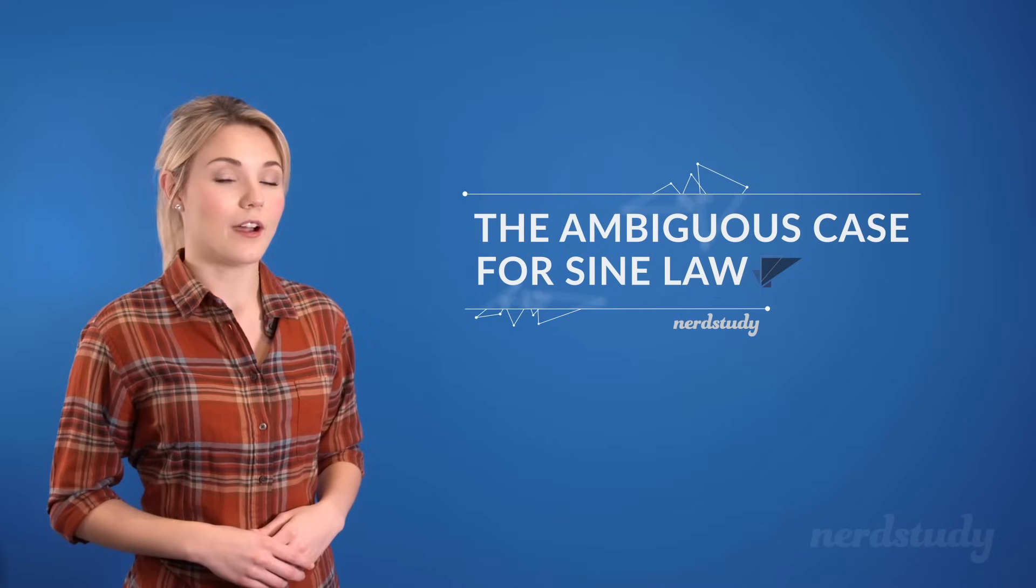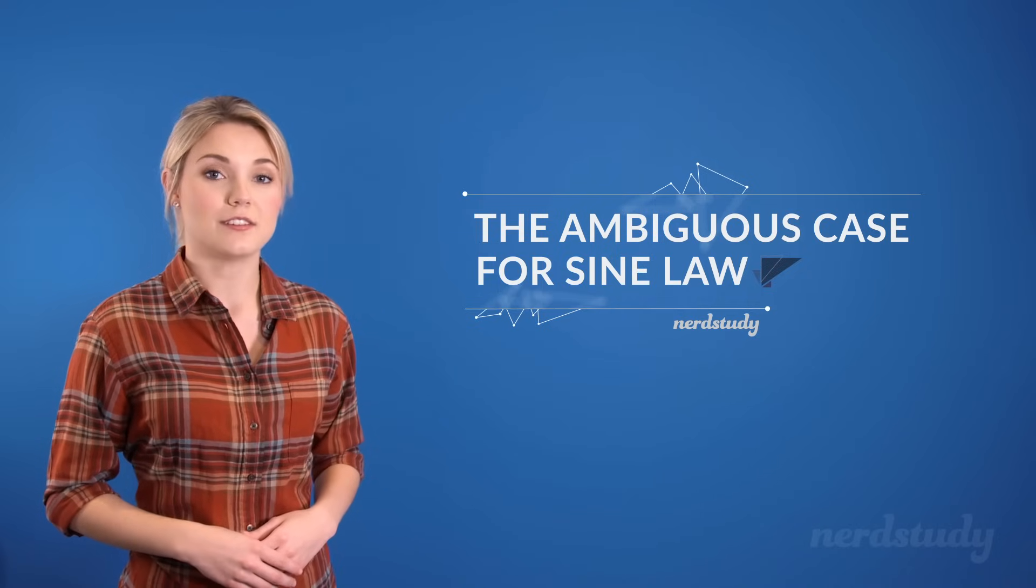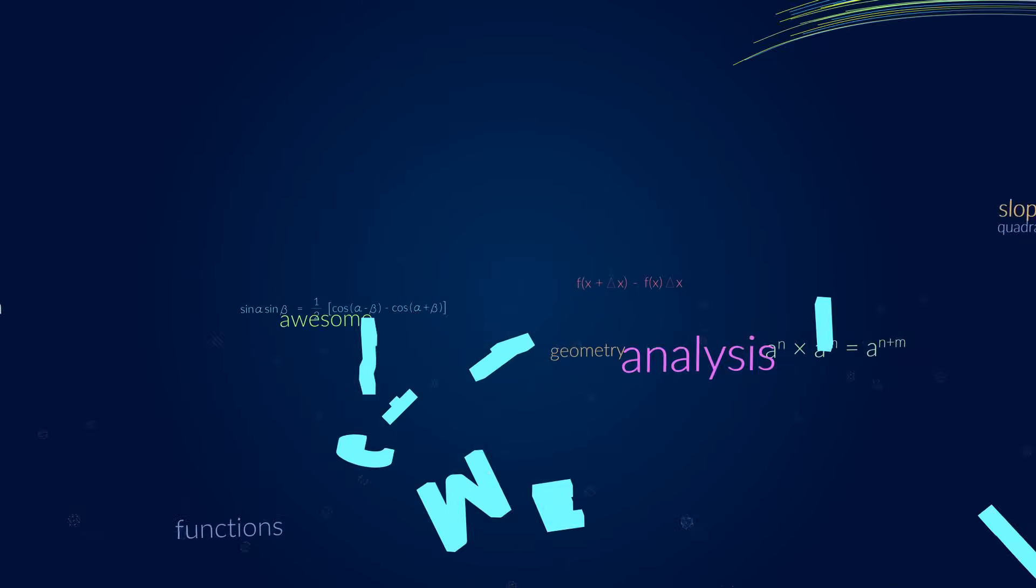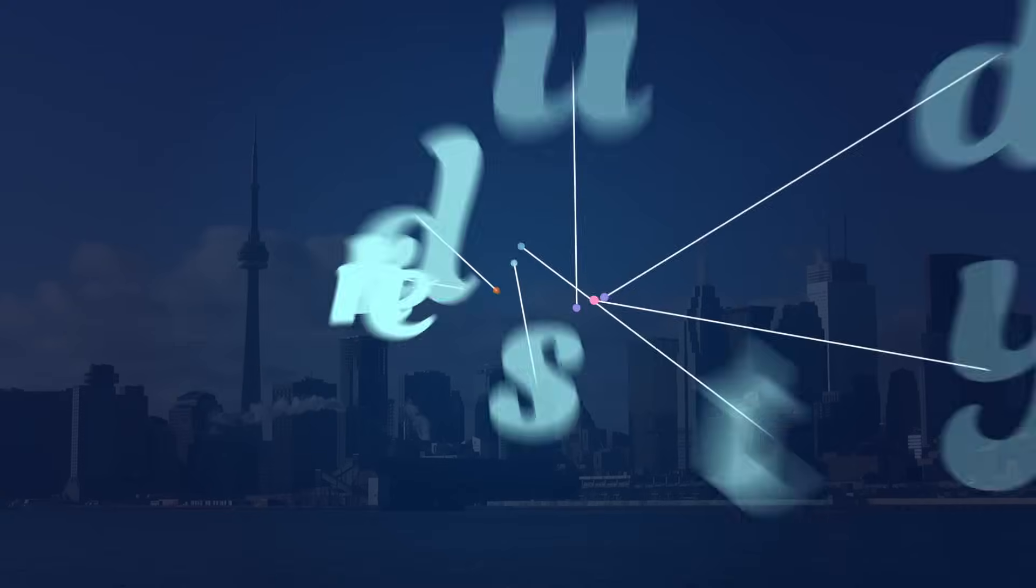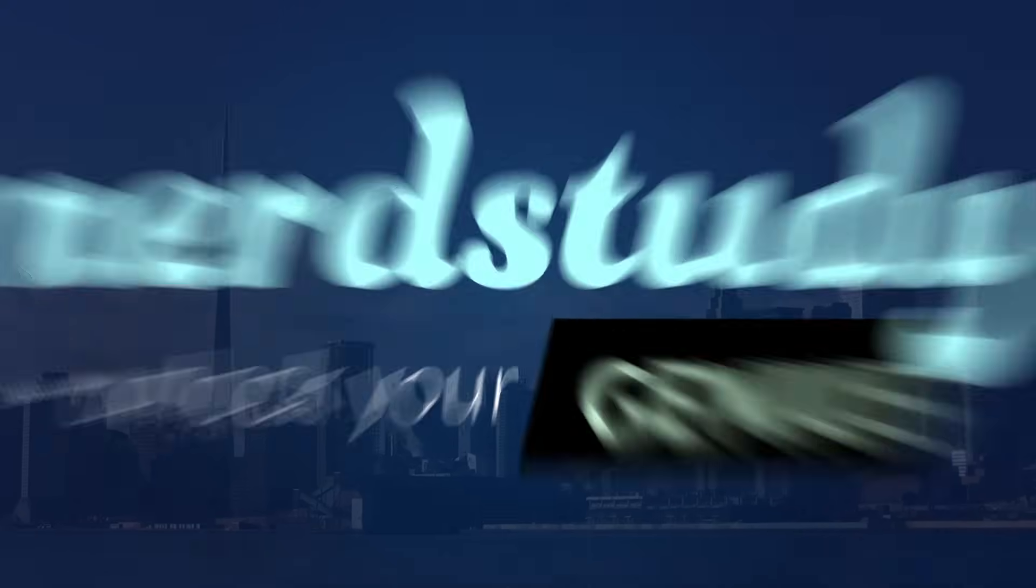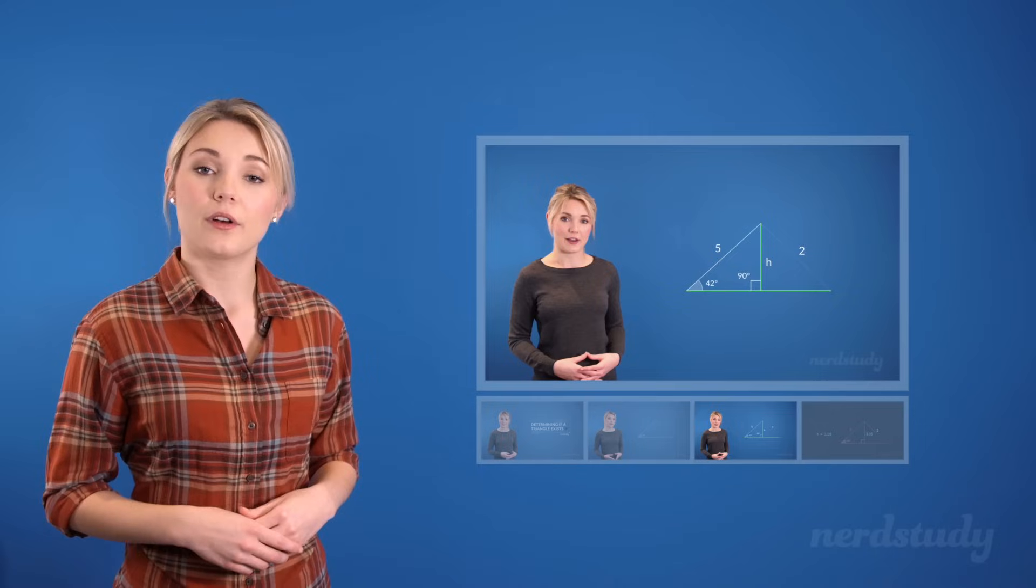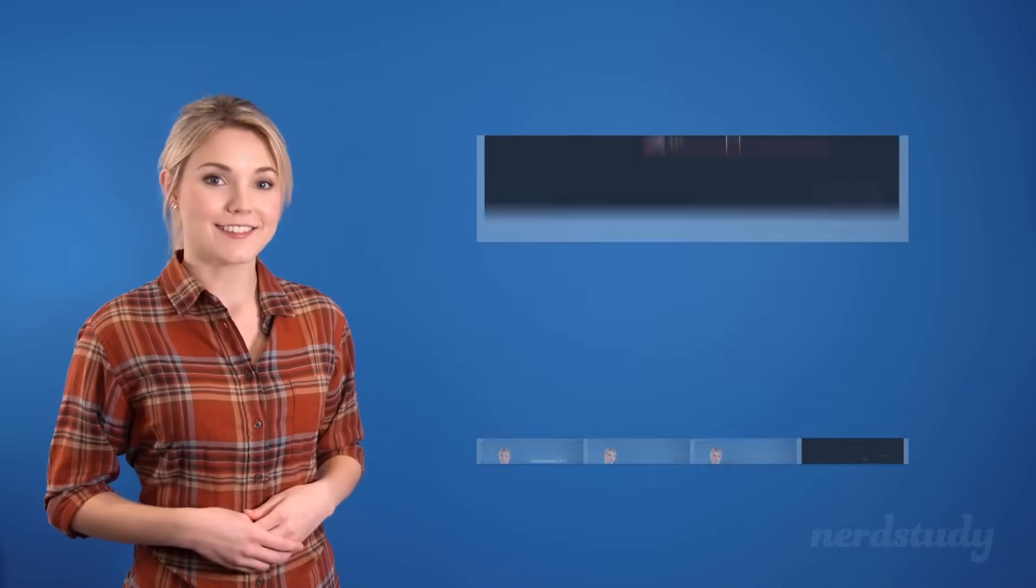In this lesson, we'll explain more about this ambiguous case and see how we can identify these situations using the sine law. Before we begin, we highly encourage you to watch our previous video on determining if a triangle exists, if you haven't already done so, in order to get some more context on what we're about to teach here. Otherwise, let's get right to it.